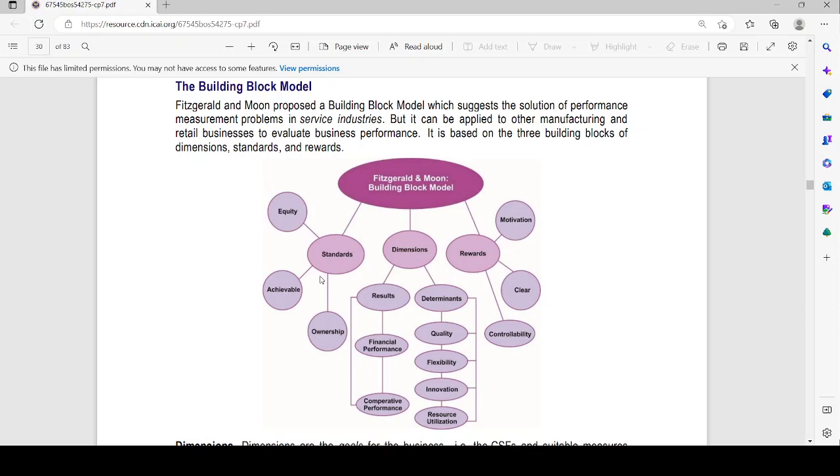Now let's revise. Standards includes achievable, ownership and equity. Dimensions are divided into two, results and determinants. Determinants includes quality, flexibility, innovation, resource utilization. Results include financial performance and competitive performance. Rewards clearly includes motivation, clear and controllability.